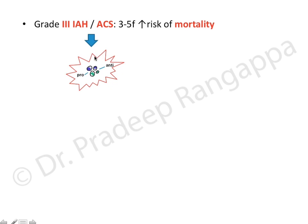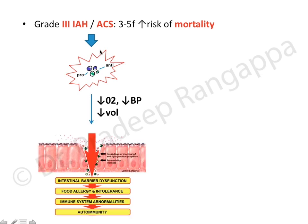Abdominal compartment syndrome causes activation of inflammatory mediators — both pro-inflammatory and anti-inflammatory — resulting in a SIRS response. This leads to hypoxemia, hypotension, and hypovolemia. At the gut level, because everything is happening in the abdomen, there is breach of the mucosal barrier and translocation of bacteria, which can lead to overwhelming sepsis.